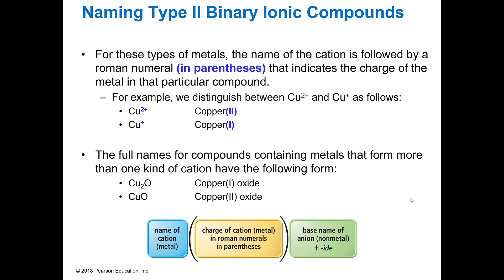So the way I tell you that is I put the charge in parentheses as a Roman numeral. So if I have copper two plus, it's copper two and copper plus one is copper one. My iron two plus would be written as iron two and iron three plus, you guessed it, is iron three.